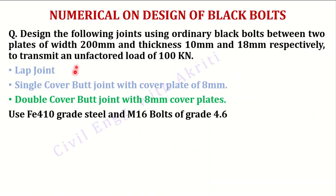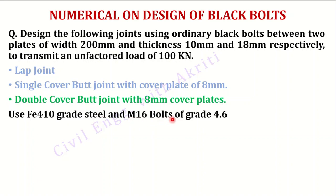In today's lecture, we will be discussing the same question using a double cover butt joint. Design the following joints using ordinary black bolts between two plates of width 200 mm and thicknesses 10 mm and 18 mm respectively, to transmit an unfactored load of 100 kN. The joints are: lap joint, single cover butt joint with cover plate of 8 mm, and double cover butt joint with cover plates of 8 mm. Use FE 410 grade steel and M16 bolts of grade 4.6.